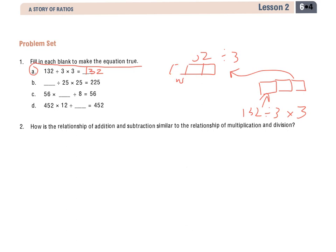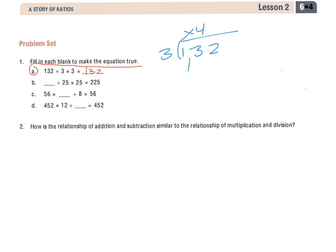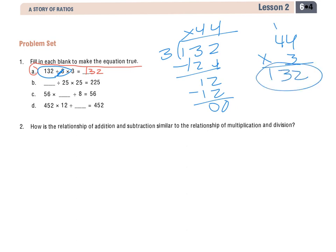Now what I'll do to demonstrate this a little bit more is I'll actually show you the math for it just to prove it. So if I have 132 and I want to divide it by 3, I'll end up with 44. So that was the division of 3. Now I need to multiply that 132 divided by 3 times 3, so 44 times 3, and I'm back at 132.